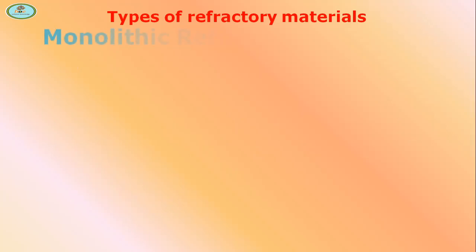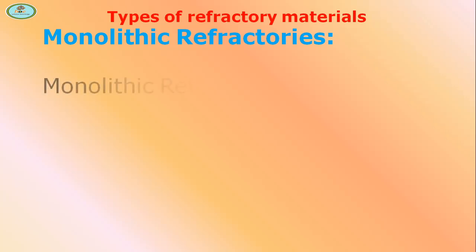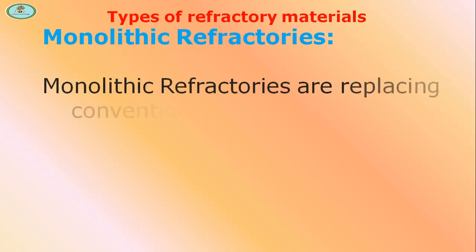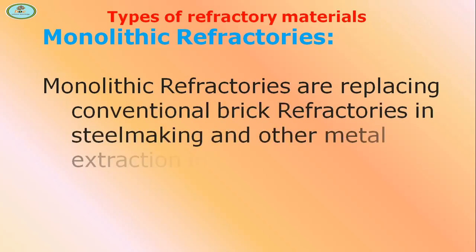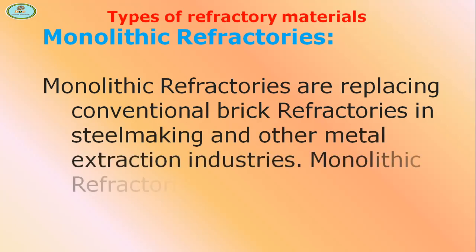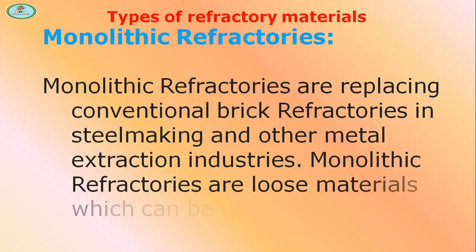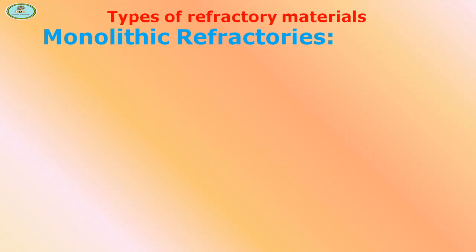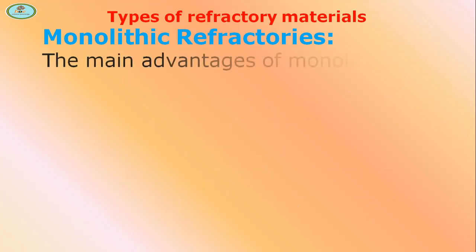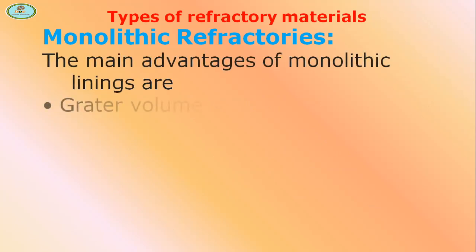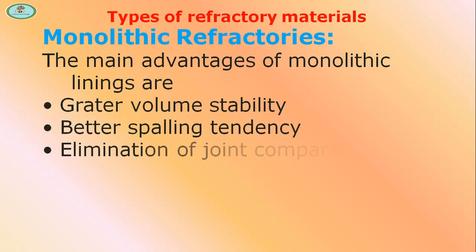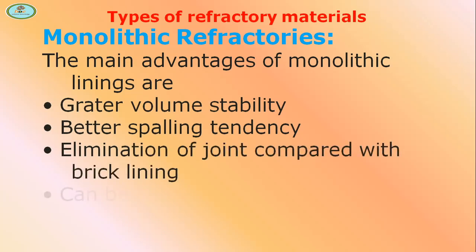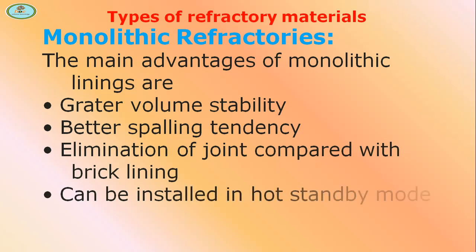Monolithic refractories are replacing conventional brick refractories in steel-making and other metal extraction industries. They are loose materials which can be used to form joint-free linings. The main advantages of monolithic linings include greater volume stability, better spalling resistance, elimination of joints compared with brick lining, can be installed in hot standby mode, and easier transportation.